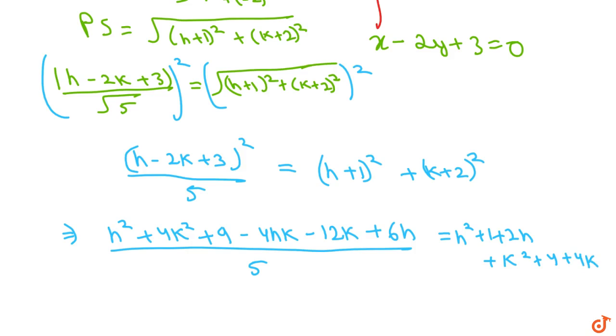Now we multiply both sides by 5. So we'll get h² + 4k² + 9 - 4hk - 12k + 6h is equal to 5h² + 10h + 20k + 5k² plus